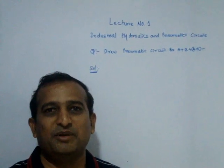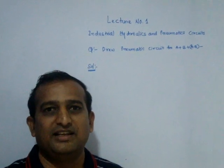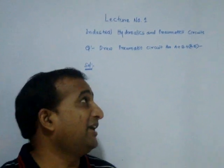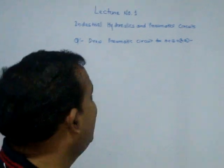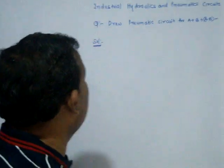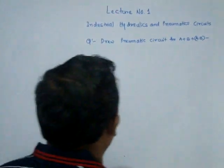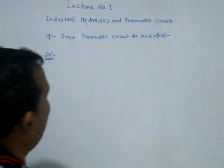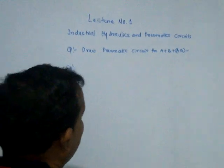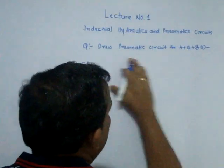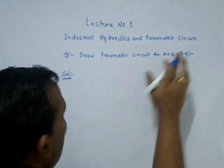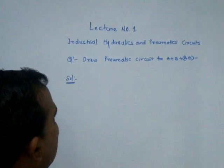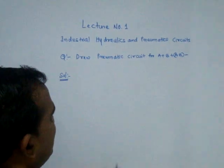Hello, this is lecture number 1, Industrial Hydraulics and Pneumatics. The question is: draw a pneumatic circuit for A+, B+, and AB-. This is a sequencing circuit.